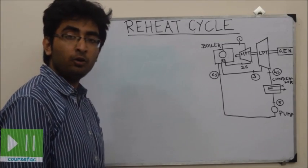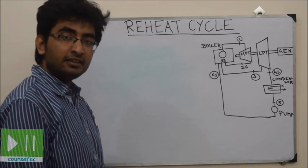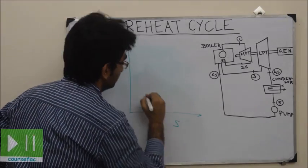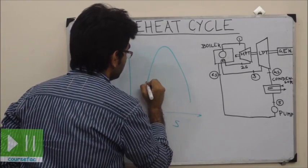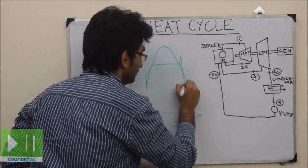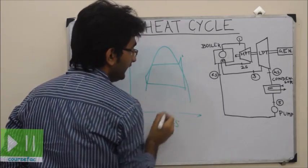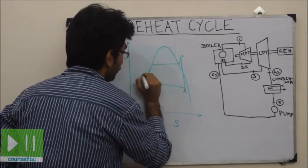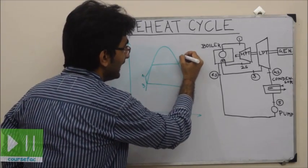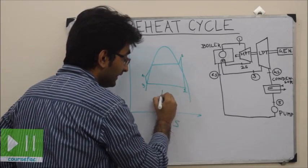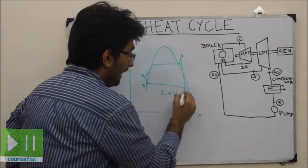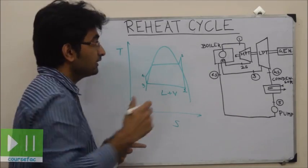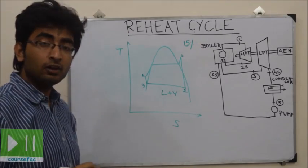Hello friends. In the previous lecture we learnt about the Rankine Cycle. Now let us consider the limitation of the Rankine Cycle, which I will explain through a TS diagram. This is point 0.1, the inlet to the turbine; 0.2 is after expansion; 0.3 is after the liquid went through the condenser; and 0.4 is after pumping. After expansion through the turbine, the maximum moisture content should be only 15%, otherwise it will corrode the blades of the turbine.